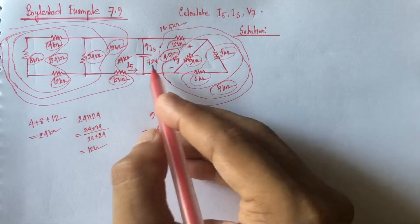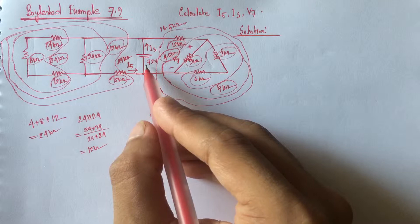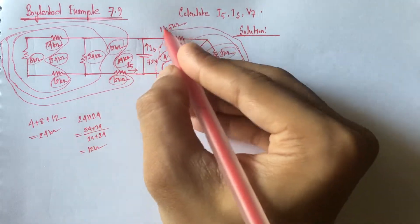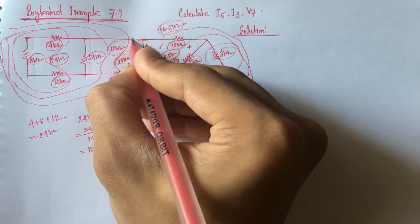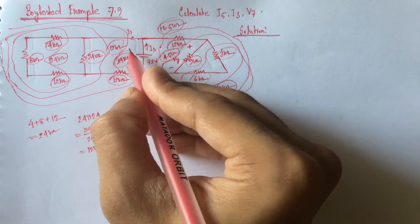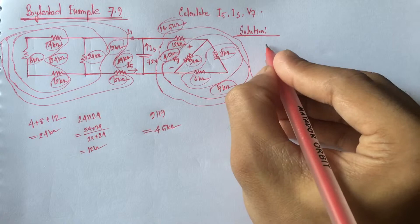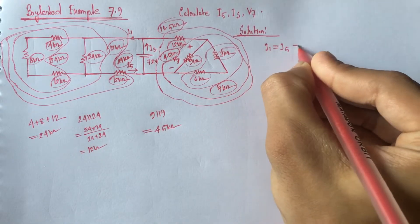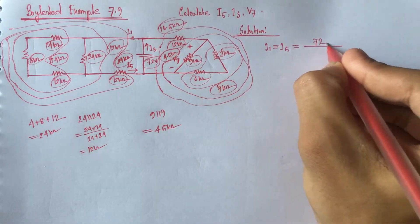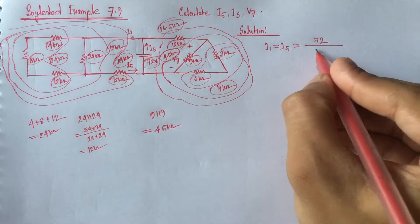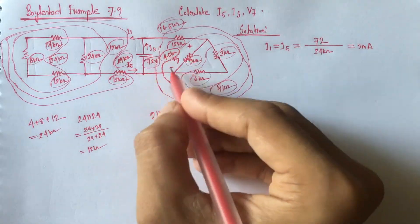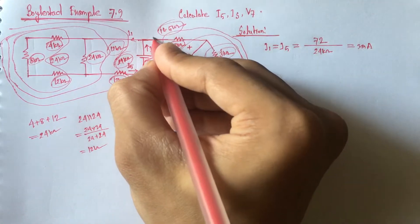Now we see that 72 V is applied across this 24 Kiloohm and this 16.5 Kiloohm. If we let this current be I1, it is also equal to I5, and this can be found using Ohm's law. So I1, which equals I5, equals 72 V divided by the equivalent resistance of 24 Kiloohm. This gives 3 mA.